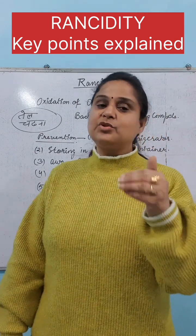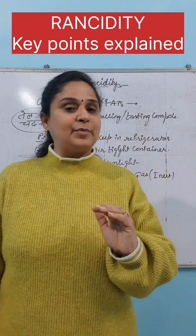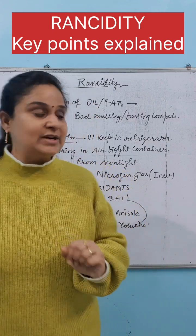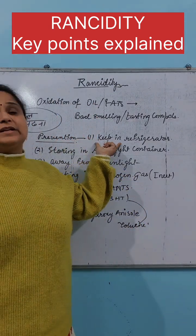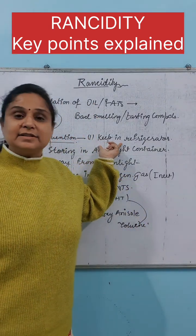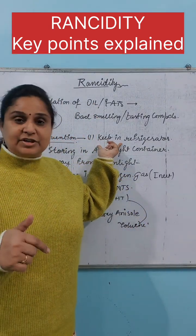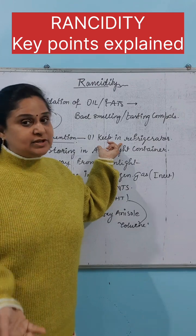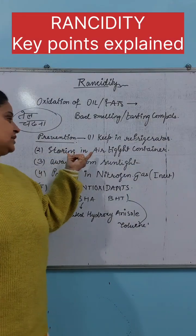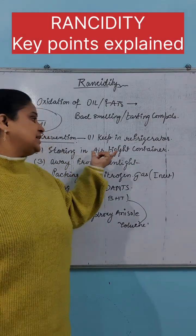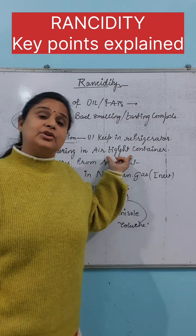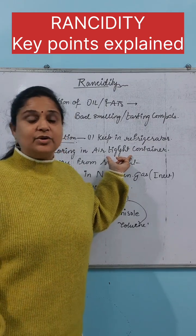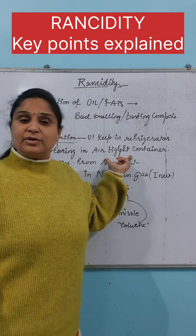Prevention ke liye — since rancidity is an oxidation process, any chemical process can be slowed down by lowering temperature. So you can keep oil in the refrigerator — temperature down, process slow, and rancidity will be slower. Next, you can store it in an airtight container, kyunki if oxygen is not there, oxidation of the oil will not happen.